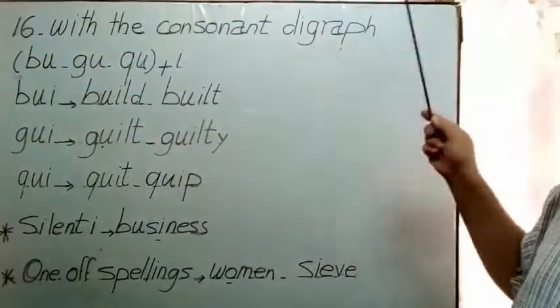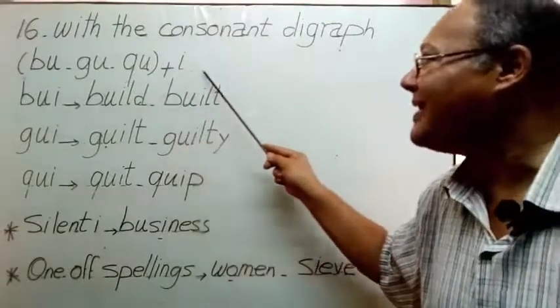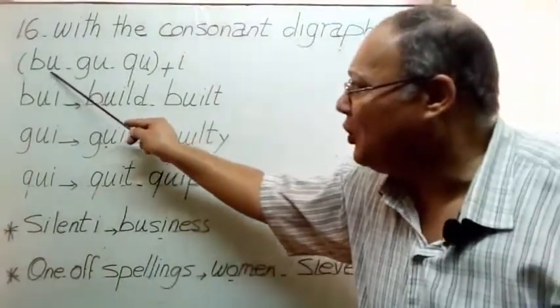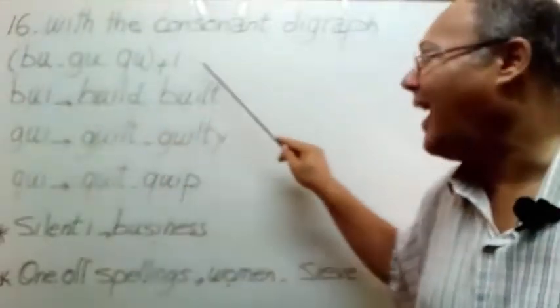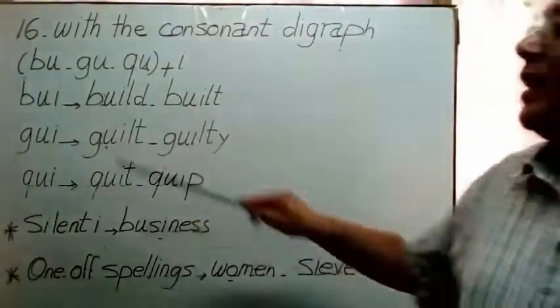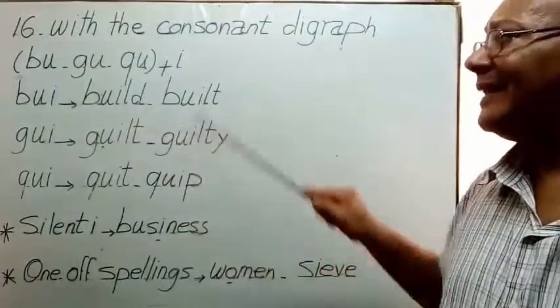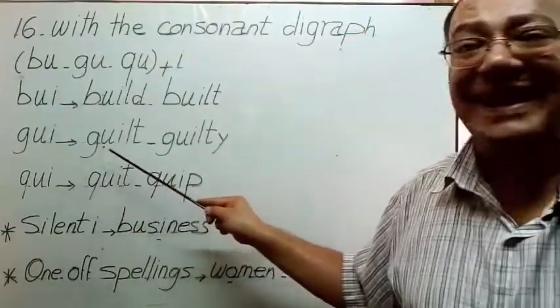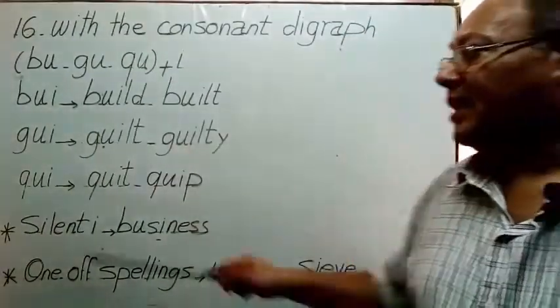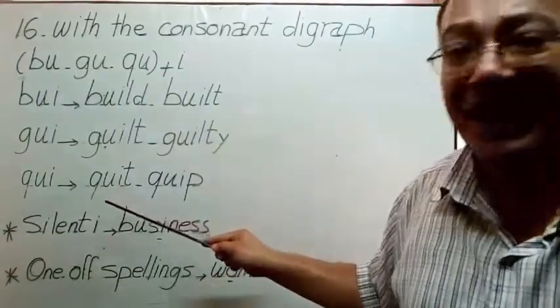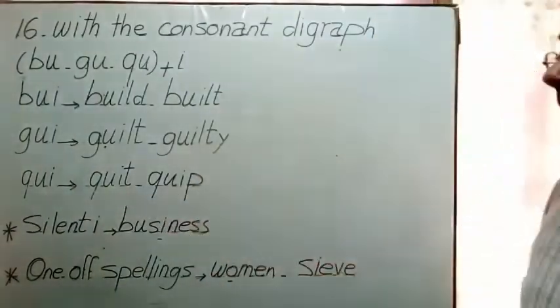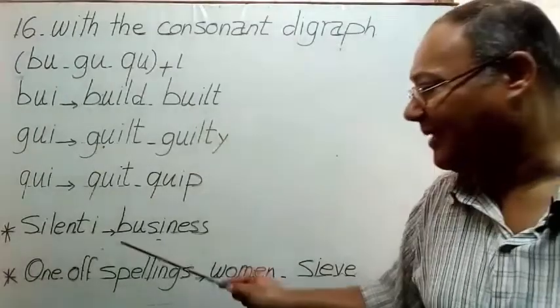With the consonant digraph B-U, G-U, Q-U plus I. BUI: build, built. GUI: guilt, guilty. QUI: quit. Silent I: business. One of the spellings: women.